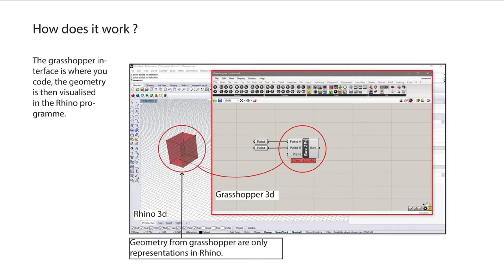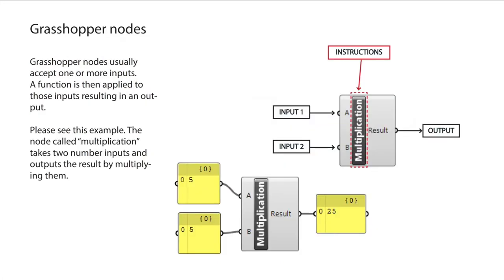So, how does it work? In the background we have the Rhino interface and in the foreground we have the Grasshopper interface. You input data and geometry into Grasshopper, and then Rhino and Grasshopper generate the geometry based on your script onto the Rhino interface. Each node does a function or is an instruction — you have inputs, something is applied to them, and you get an output. For example, a multiplication node multiplies A and B: if A is 5 and B is 5, the output is 25.